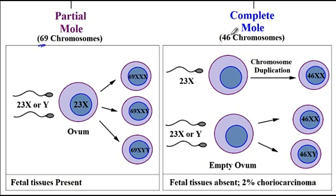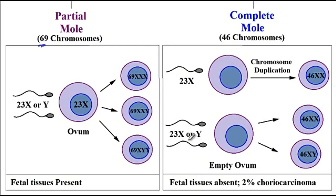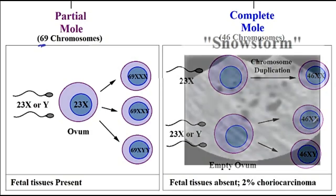With the complete mole, there are 46 chromosomes. A single sperm can fertilize an empty egg — the egg is empty and doesn't have any nucleus, so all the chromosomes are coming from the father. After fertilization, it could undergo chromosome duplication to give rise to 46 chromosomes. Alternatively, two sperms can fertilize an empty egg, also giving rise to 46 chromosomes.